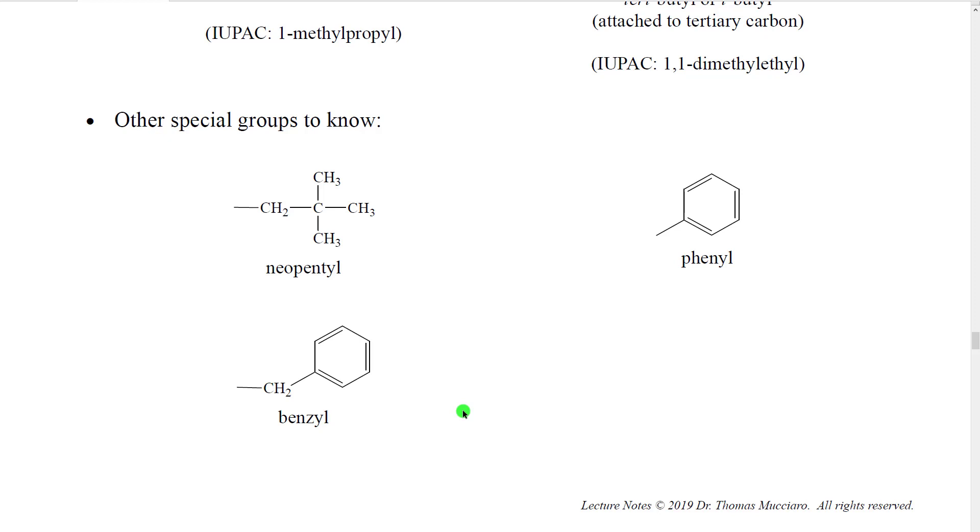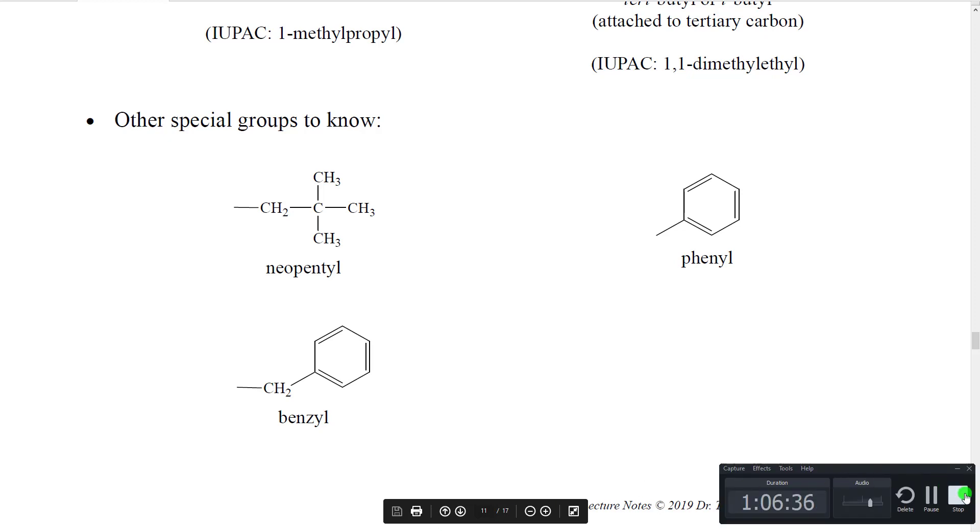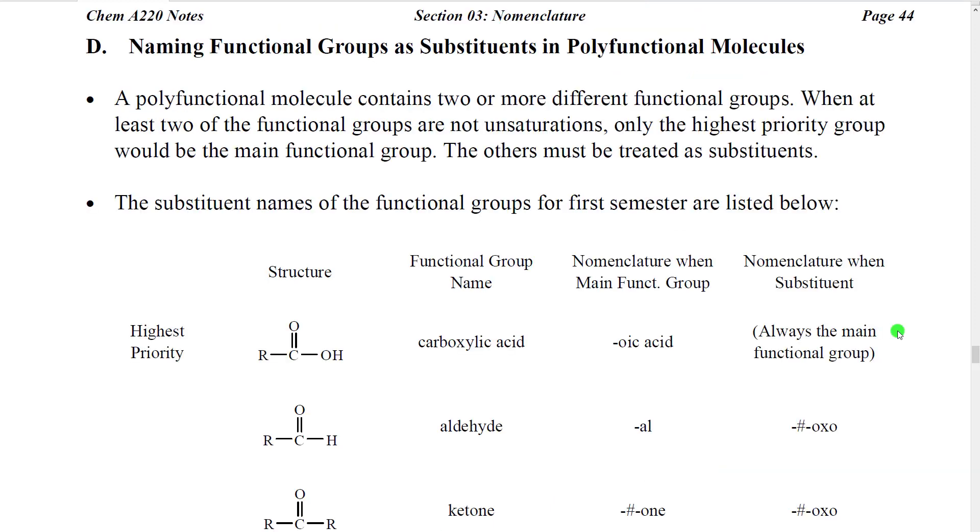And we will see these being used in our class and in standardized exams and in homework and so forth. In the next section, we're going to look at how we deal with molecules that have more than one functional group in them. So we call these molecules polyfunctional molecules. When at least two of the groups are not unsaturations, then only the highest priority group would be the main functional group. So what we must do is treat the other groups as substituents.